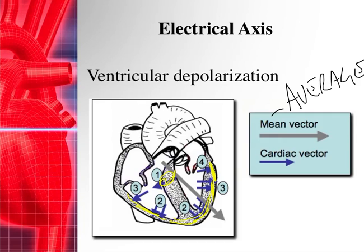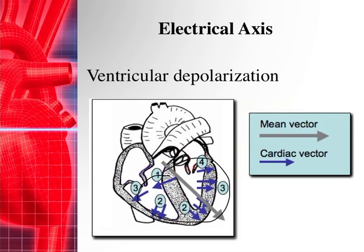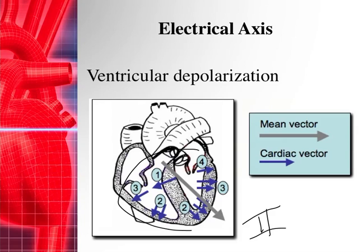We need to average all those vectors out to get an electrical picture. Your QRS axis is simply the average of all this ventricular depolarization, and whatever direction that average is going is our mean vector. So when you're looking at Lead II with normal conduction, Lead II's positive electrode is down here and you get a good upright QRS complex.